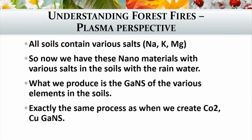All soils contain various salts — sodium, potassium, and magnesium salts in different combinations. Now we have these nanomaterials with various salts in the soil with the rainwater, and what we produce is the GANS of the various elements of the soil. This is exactly the same process as in our little box when we're creating CO2 or copper GANSes — we first create the nanomaterial, then with the salt we create the GANS of it. And this is exactly what nature is doing following a forest fire.